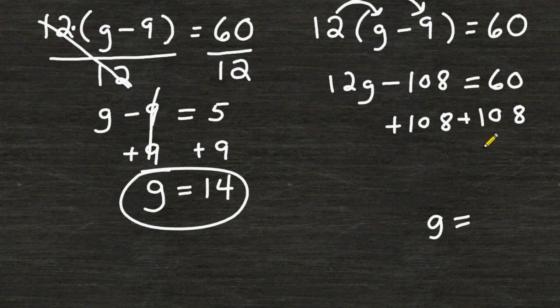60 plus 108 is 168. On the left hand side of our equation opposite integers cancel out to be 0 leaving us only with 12 times g on the left hand side.